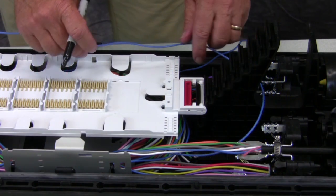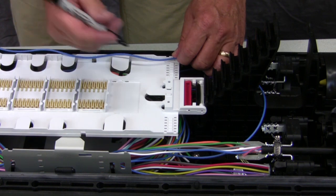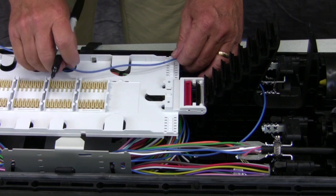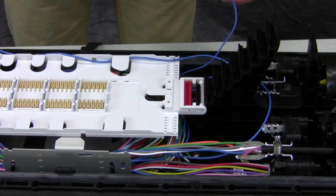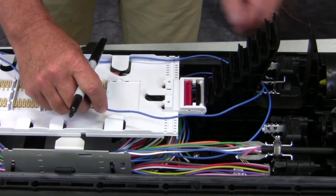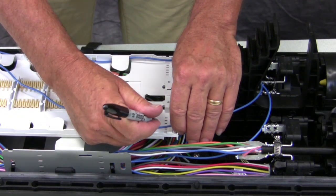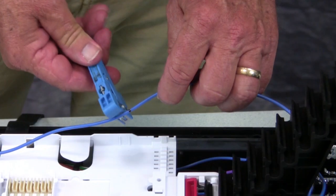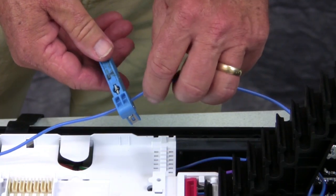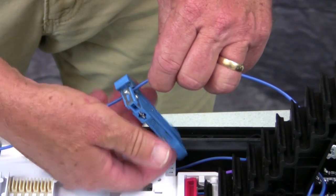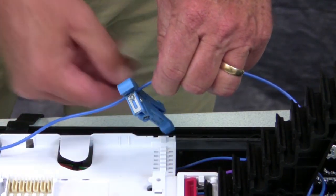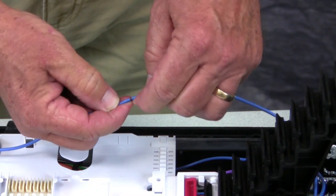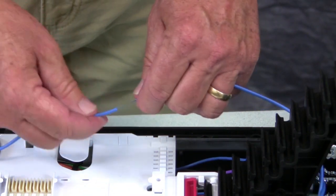Route the feeder and distribution tubes to the appropriate side of the tray. Mark each tube one-quarter inch beyond the tie-down slots. Use a buffer tube cutter to cut each tube at the mark, and remove the tube from each fiber group.